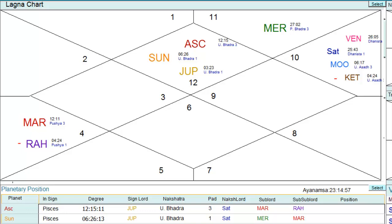Hello friends, this is a new video from vedegastro.in and today we will understand how we use a transit chart or a gocha chart with our lagna chart. What we need to do is check where our moon is placed in our lagna chart, then change our lagna chart to our moon chart and place the current transit.